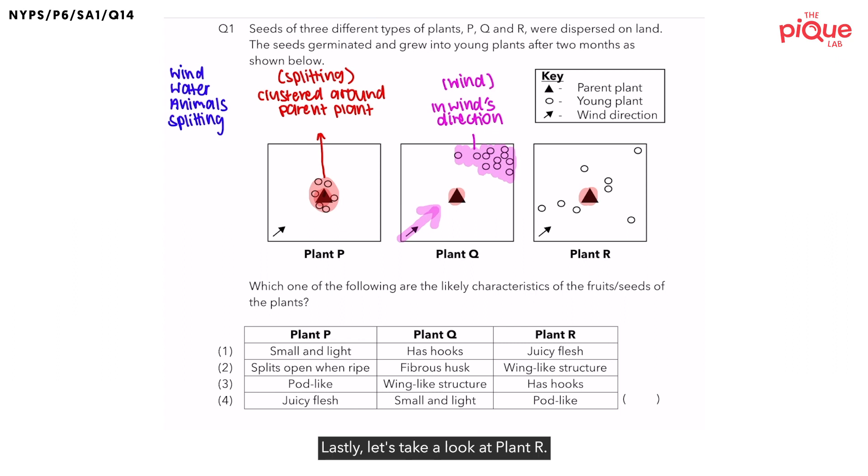Lastly, let's take a look at plant R. What kind of pattern are the seeds dispersed in? Do they have a specific pattern? No specific pattern, right? So, they are randomly dispersed. If the seeds are randomly dispersed, which method do you think would allow the seeds to be randomly dispersed? Could it be by water? No. If it's by water, the young plants would be found along the side of the water body. So, it cannot be by water. Therefore, it has to be by animals.